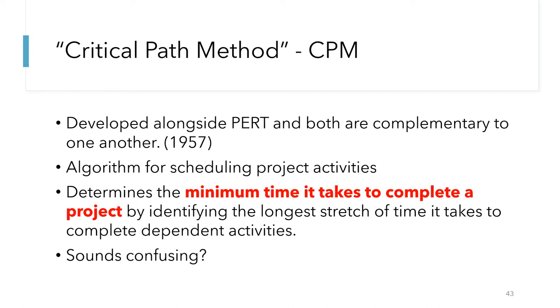Now I know this explanation sounds confusing, and the example I'm about to show might still be a bit confusing. In fact, the first time I saw the Critical Path, I asked myself: how can the longest sequence of tasks be the shortest path? But I'll also be showing another example that's more relatable to help illustrate PERT and the Critical Path Method.